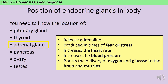The adrenal glands secrete a hormone called adrenaline in times of fear or stress. This increases the heart rate, increases the blood pressure, and also boosts the delivery of oxygen and glucose to the brain and muscles. This is really useful in a fight-or-flight situation, because it means your cells are able to respire faster, as they have more glucose and more oxygen.